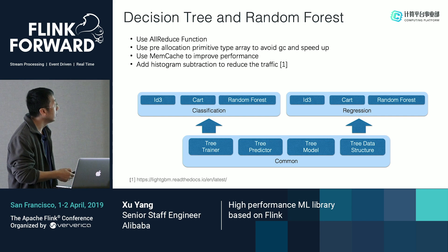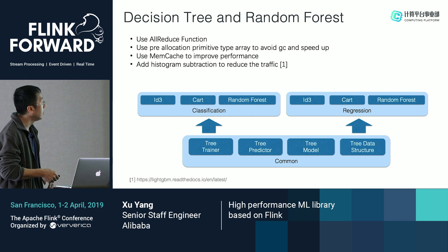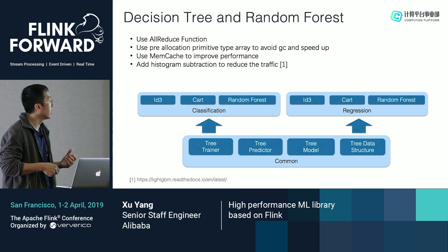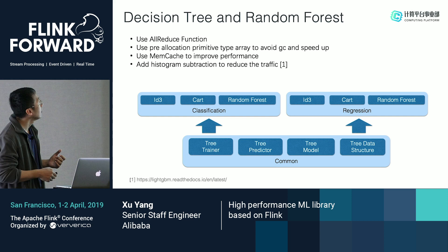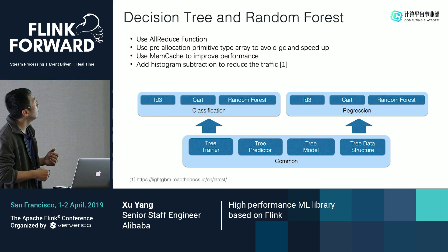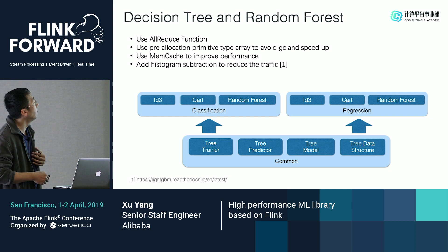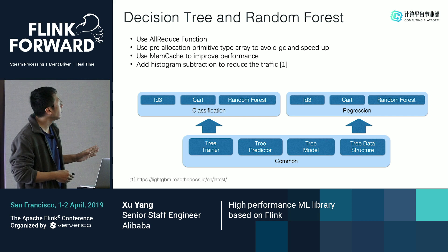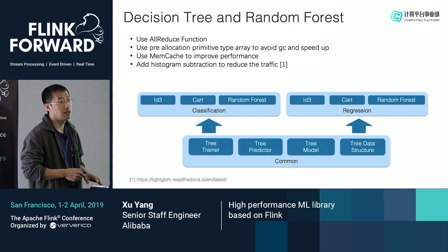For the decision tree and random forest, we also use the same method. First, in the implementation we extract the common parts, and from this common part we extend to classification and regression. For performance, we also use the AllReduce function, and we use pre-allocation to avoid garbage collection and speed up execution. We also use memory cache to improve performance. For the decision tree, histogram subtraction is a very useful technique for this algorithm. Using this approach, we got 1.4x speedup compared to Spark ML.